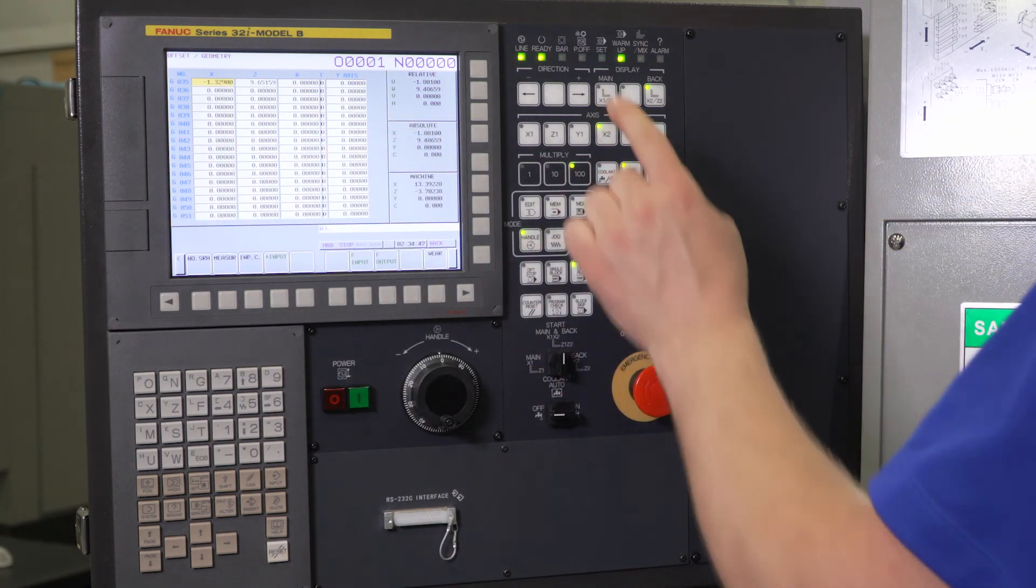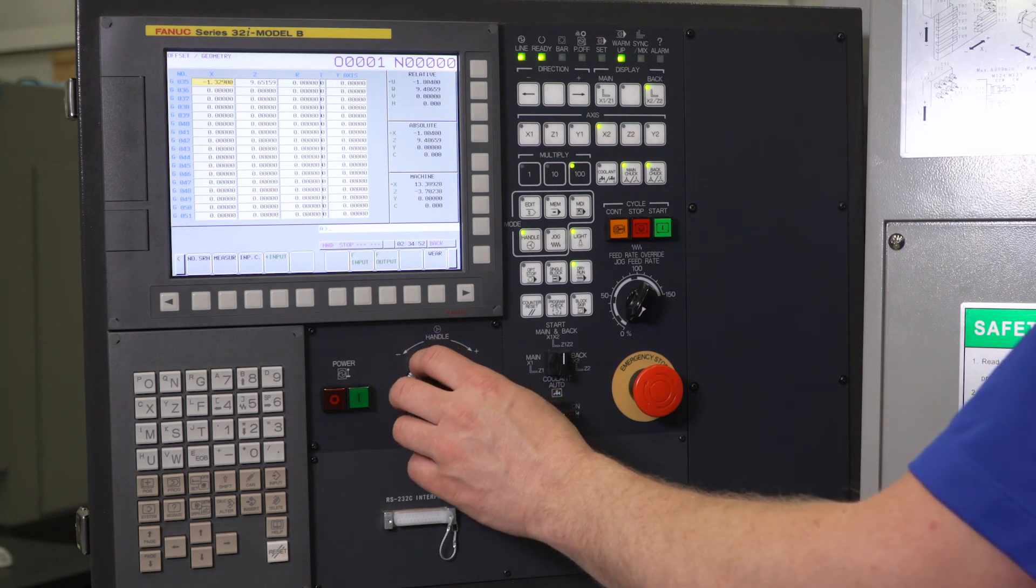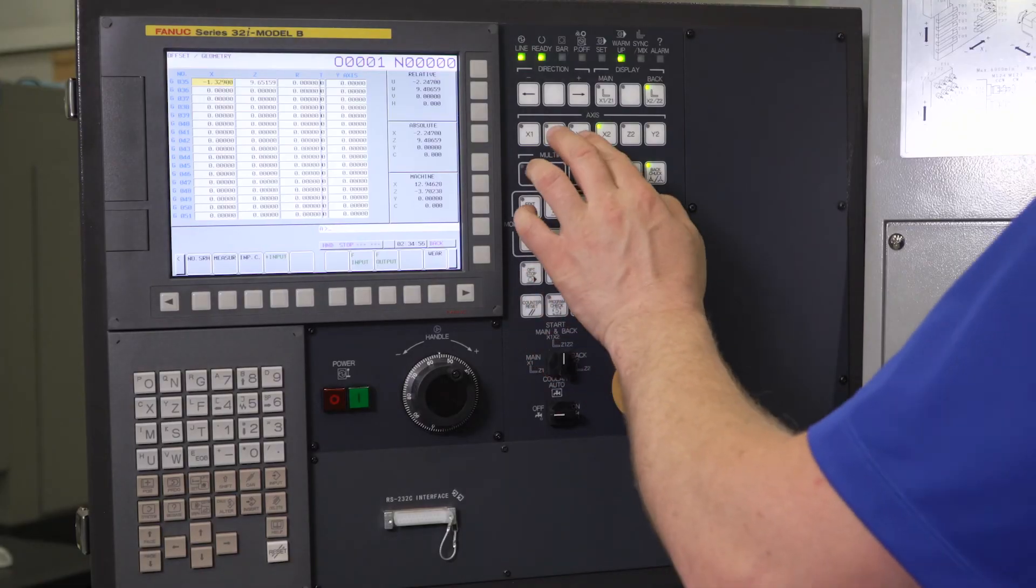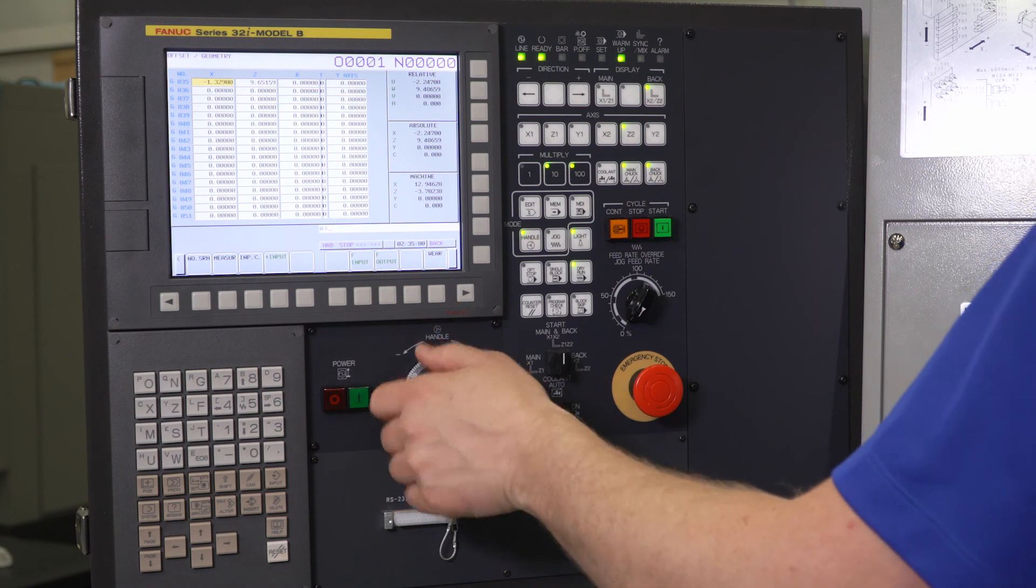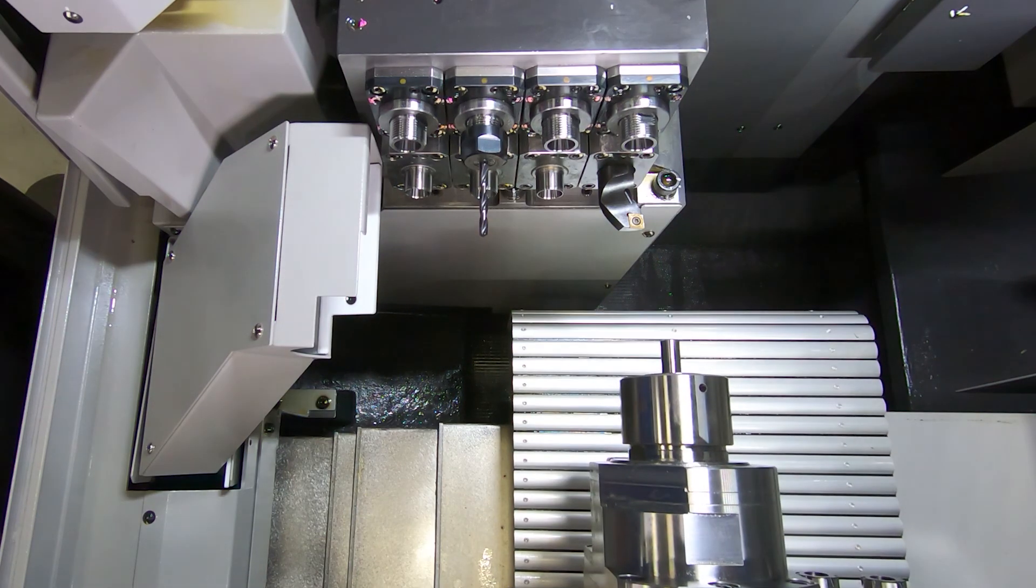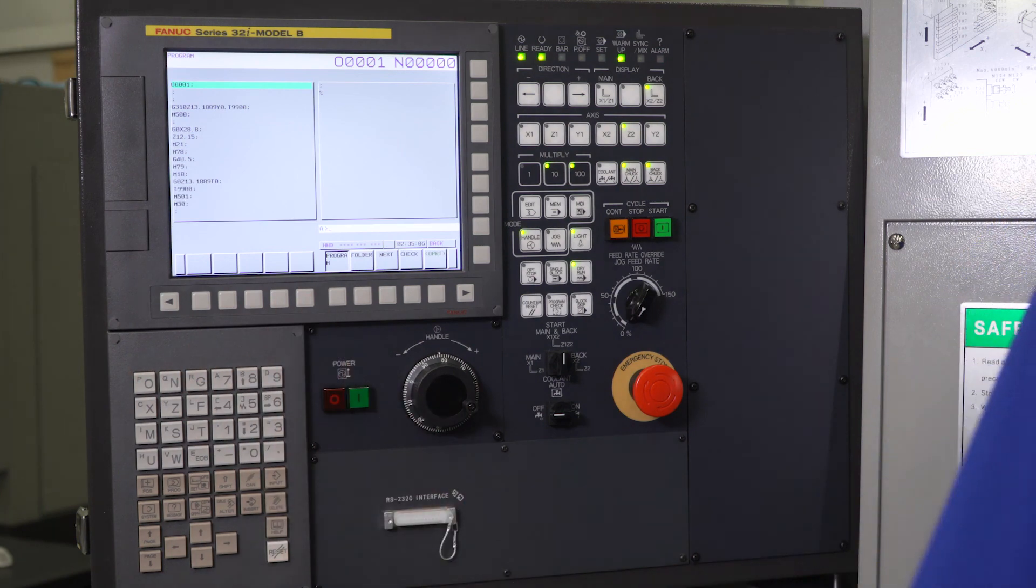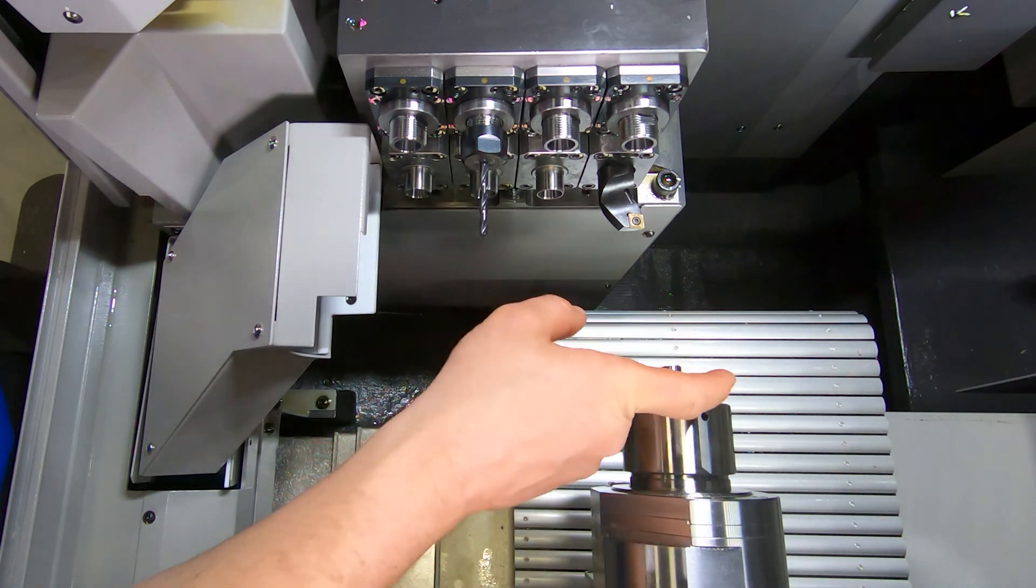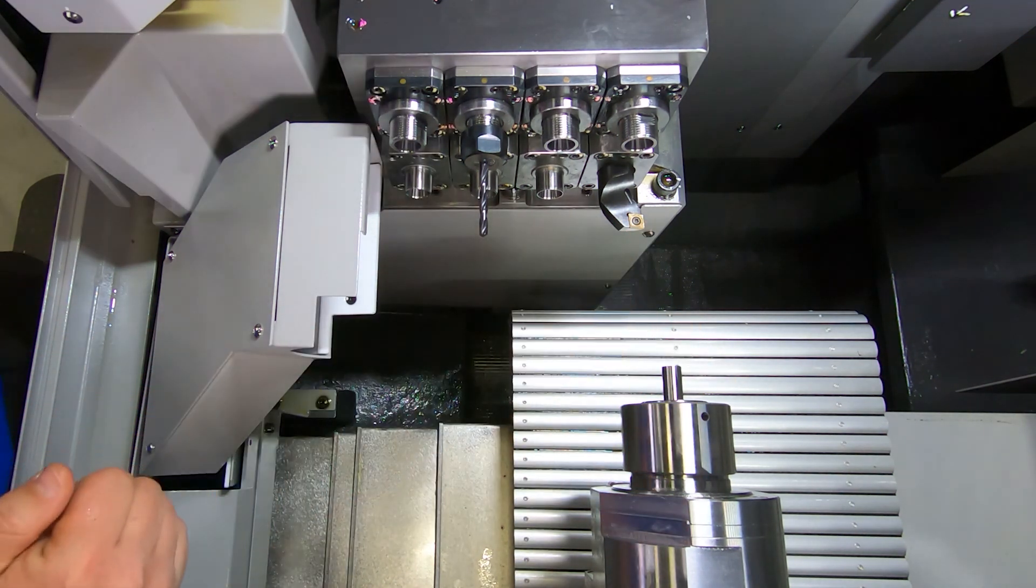I come off. Now I can handle my Z2. I'm going to go fast because I know I'm clear of everything. And I'm going to handle all the way back. I'm going to reset my alarm for over travel. And now my turning tool is touched off in X and Z to the tip of my part and the OD of my part. We're all set to cut a part with that tool.